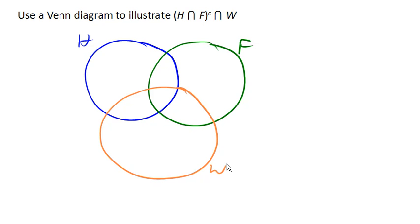So let's start with H intersect F. So remember, H intersect F was this region here. Right? It was this area that was in both H and F. Now we want the intersection of...